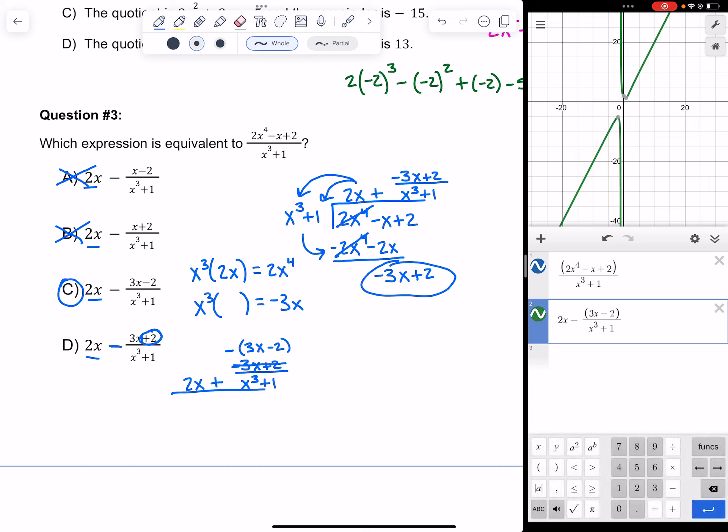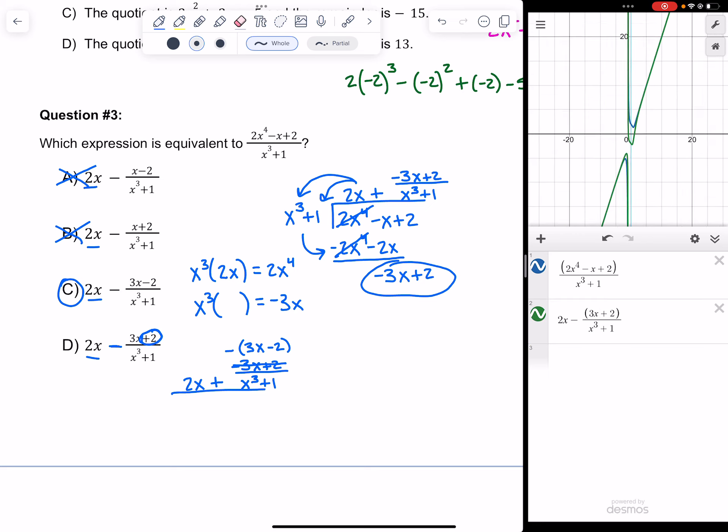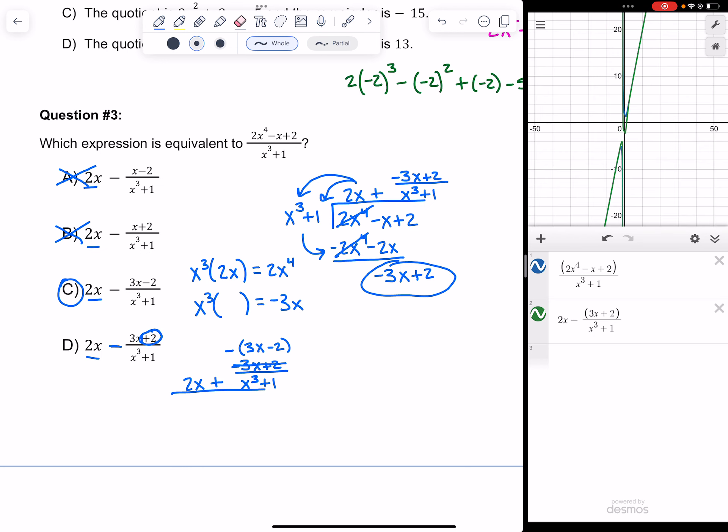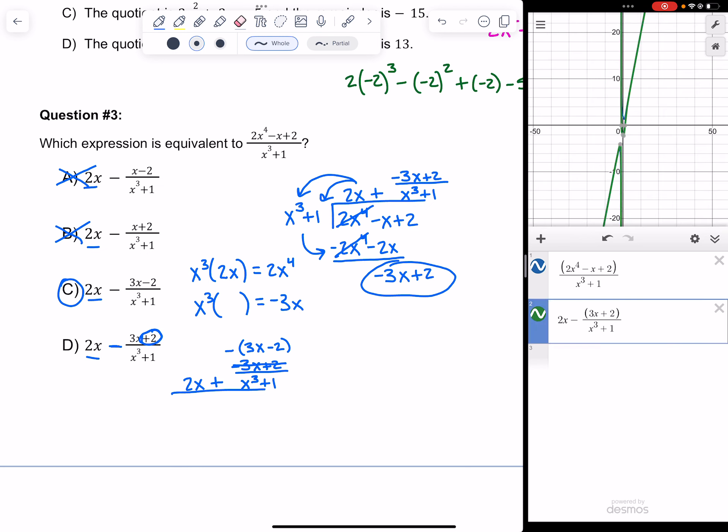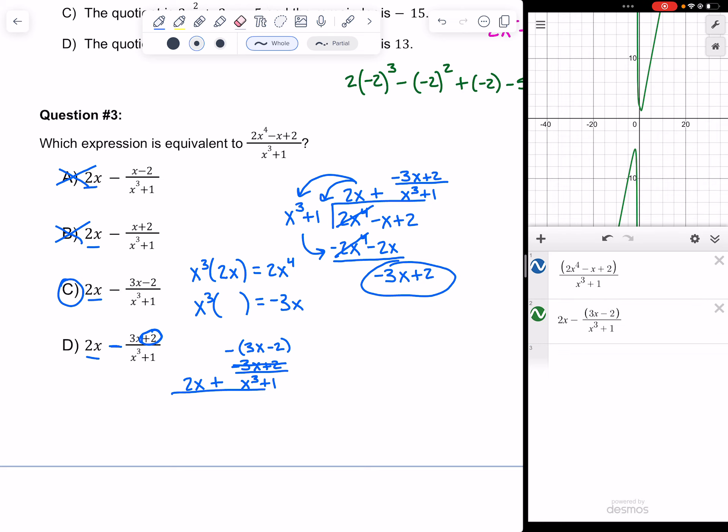But notice in the numerator, if I change that to answer choice D and make that a plus 2, they don't quite line up. You can kind of see they're off. So that helps you check it. You could also use this to solve it if no one's checking your work. You could just type those in and figure out it has to be C based on the graphs being equivalent.